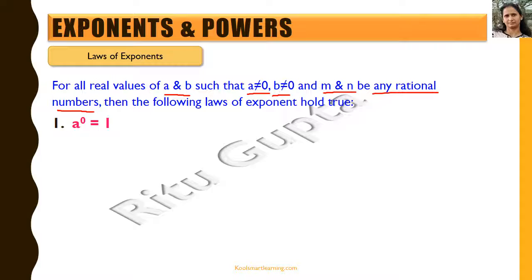The first law states that a raised to the power 0 is equal to 1. This is applicable for any real value of a such that a is not equal to 0. For example, 5 raised to the power 0 — by definition of exponential notation, this is 1 multiplied by 5 zero number of times, which means 1 multiplied with nothing, so that equals 1. If we replace 5 with any other real number other than 0, the result is the same.